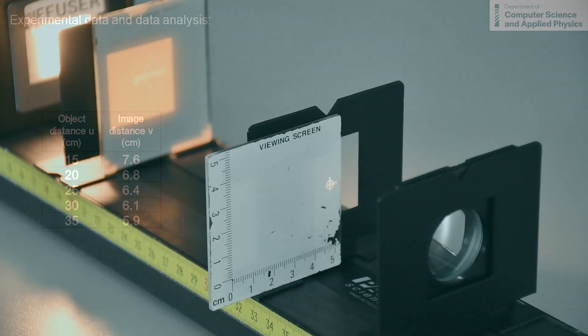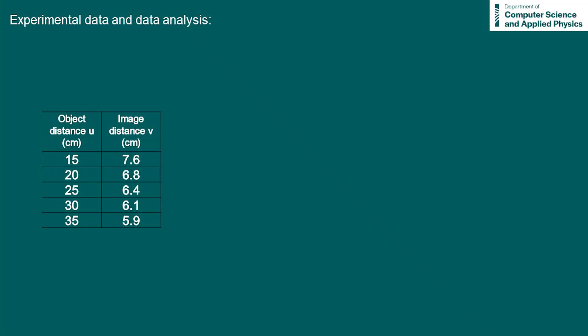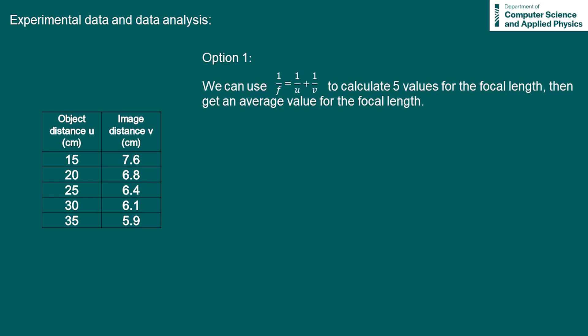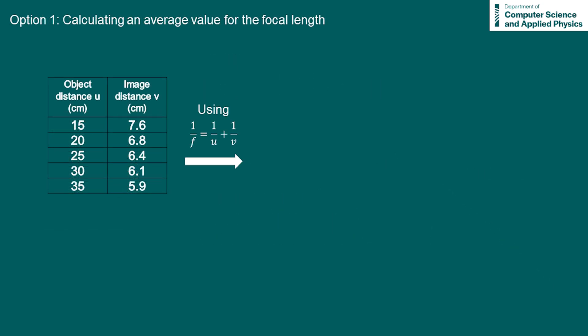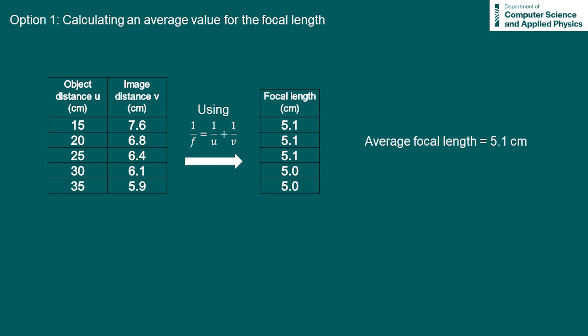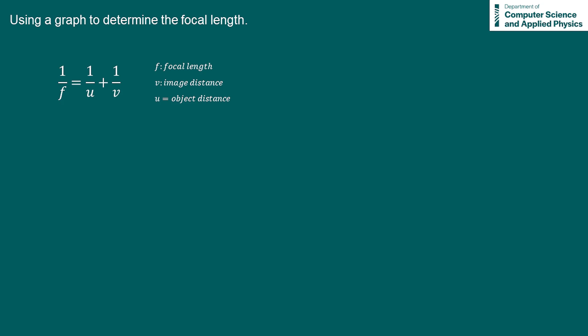Here is my experimental data. We have two options to determine the focal length of the mirror. The first option is to use the lens formula to calculate five separate values for the focal length and then get an average. The second option would be to plot one over v versus one over u — the intercept of the line of best fit is equal to one over f. Using the lens formula to calculate five different values for f, the average value of the focal length was found to be 5.1 centimeters.